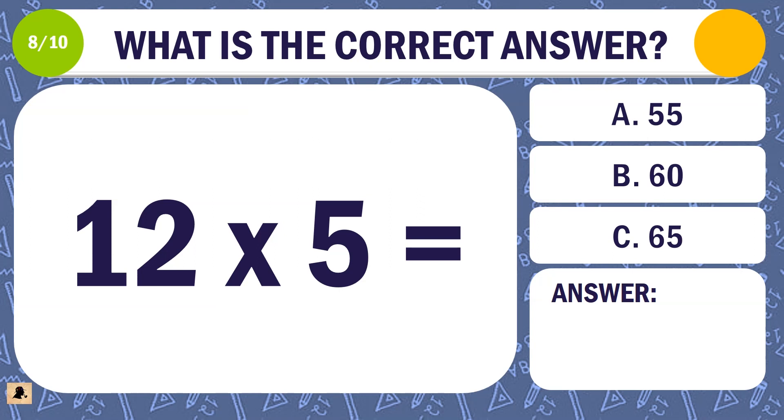Question 8. What is the correct answer for 12 times 5? A. 55. B. 60. Or C. 65.